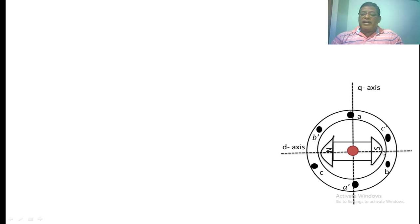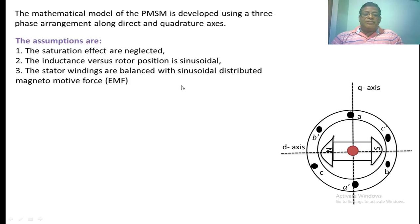Axes of the three stator windings and DQ axis are shown in the diagram. We have taken some assumptions when modeling the permanent magnet synchronous motor. First, saturation effect is neglected. The inductance versus rotor position is sinusoidal. The voltage induced in the stator winding due to flux from the rotor is sinusoidal.